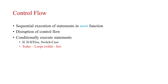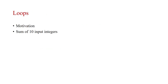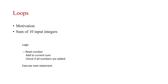We have two ways of creating loops: first using while and the second one using for. Let's first look at the motivation behind loops. For example, if I have 10 integer numbers and I want to take them as input and add each one of them, logically you would read the number, add to the current sum, and check if all numbers are added.